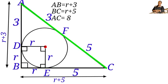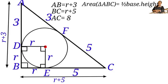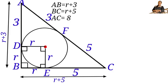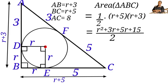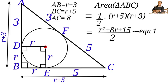The length of line AB will be R plus 3 units, and the length of BC will be R plus 5 units. The length of AC will be 3 plus 5, which is 8 units. Now, the area of triangle ABC is half base times height. Substituting the values, we have (1/2)(R + 5)(R + 3). Expanding, we get R² + 3R + 5R + 15, all over 2, which equals (R² + 8R + 15) / 2. Let us call this equation 1.